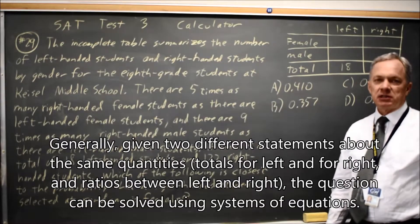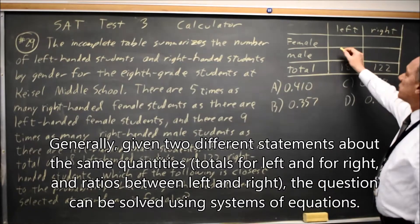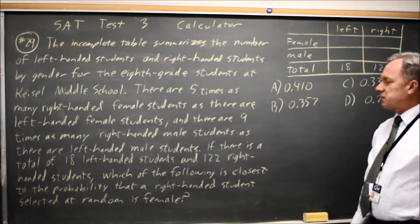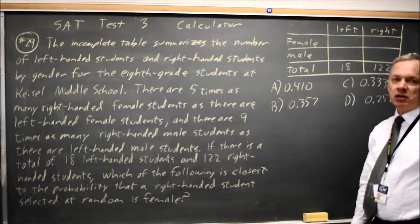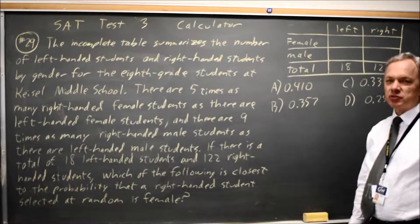This turns out to be a system of equations to find out the numbers of male and female left- and right-handers, and then they ask us a follow-up question finding a probability from the table. So first let's solve the system of equations.